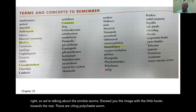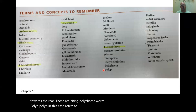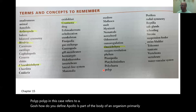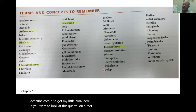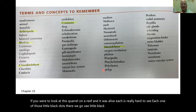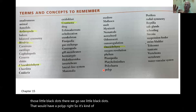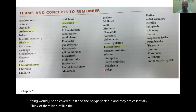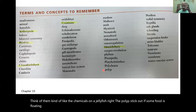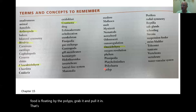Polyp refers to part of the body of an organism, primarily used to describe coral. If you look at a living coral on a reef, each of those little black dots would have a polyp — a soft tissue projection of the coral. The polyps stick out and are essentially like the tentacles on a jellyfish. If food is floating by, the polyps grab it and pull it in — that's an important way corals eat.